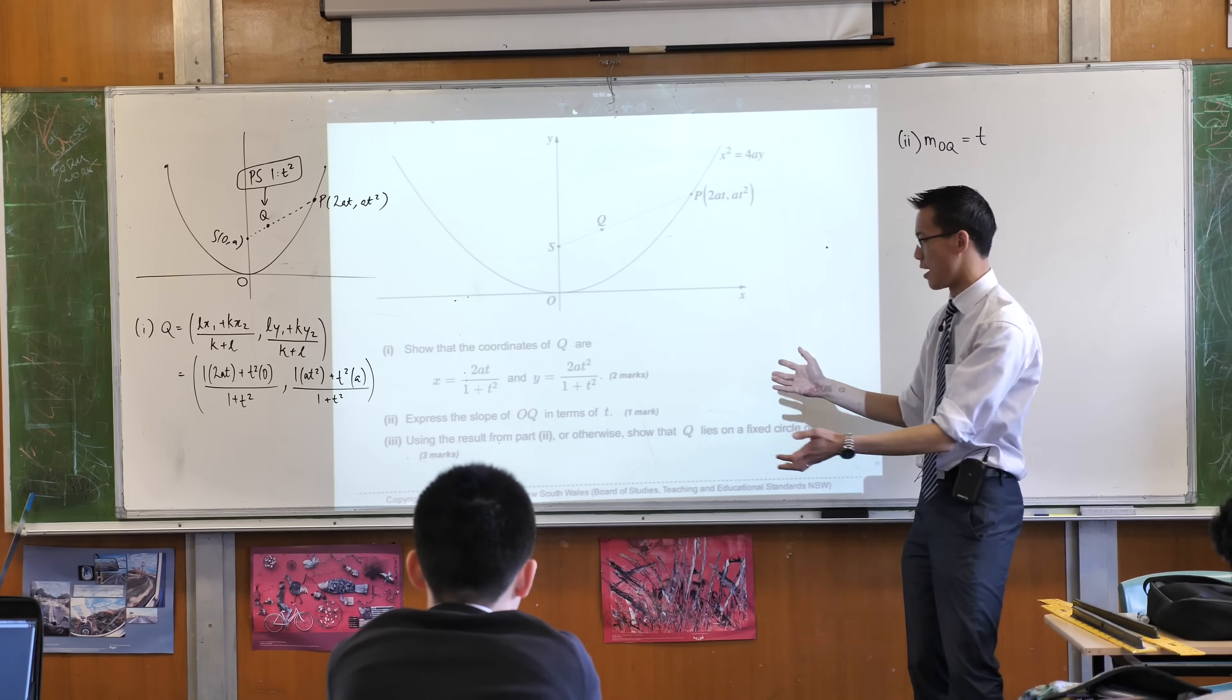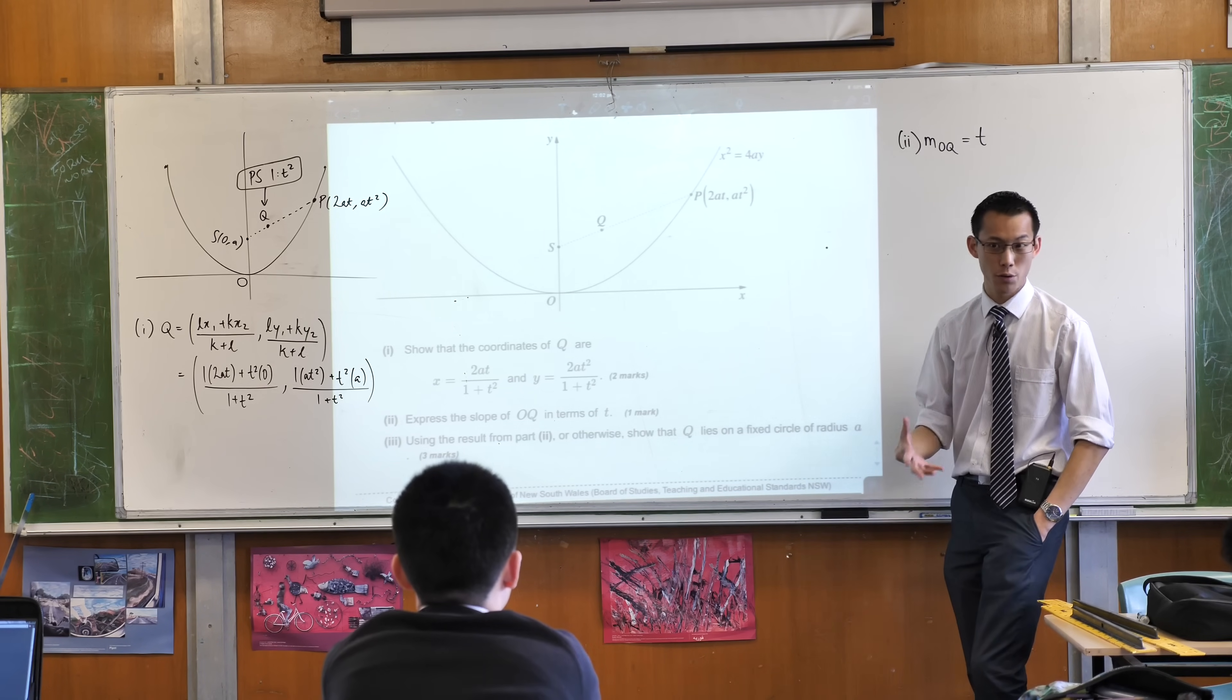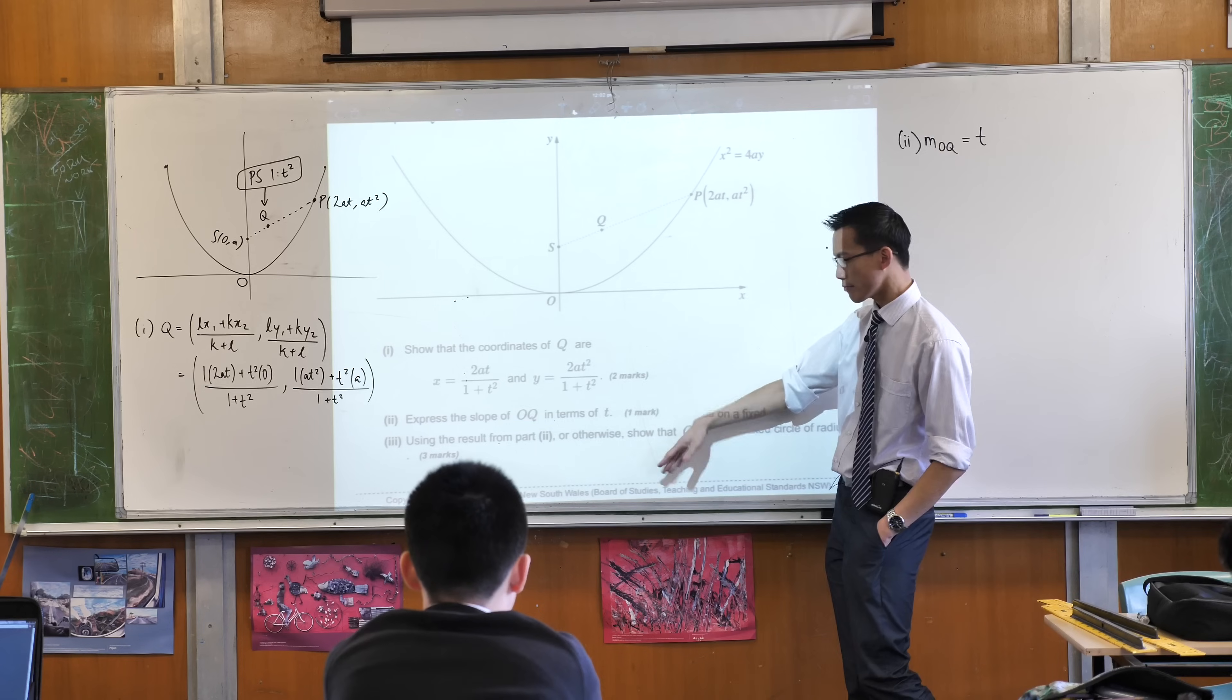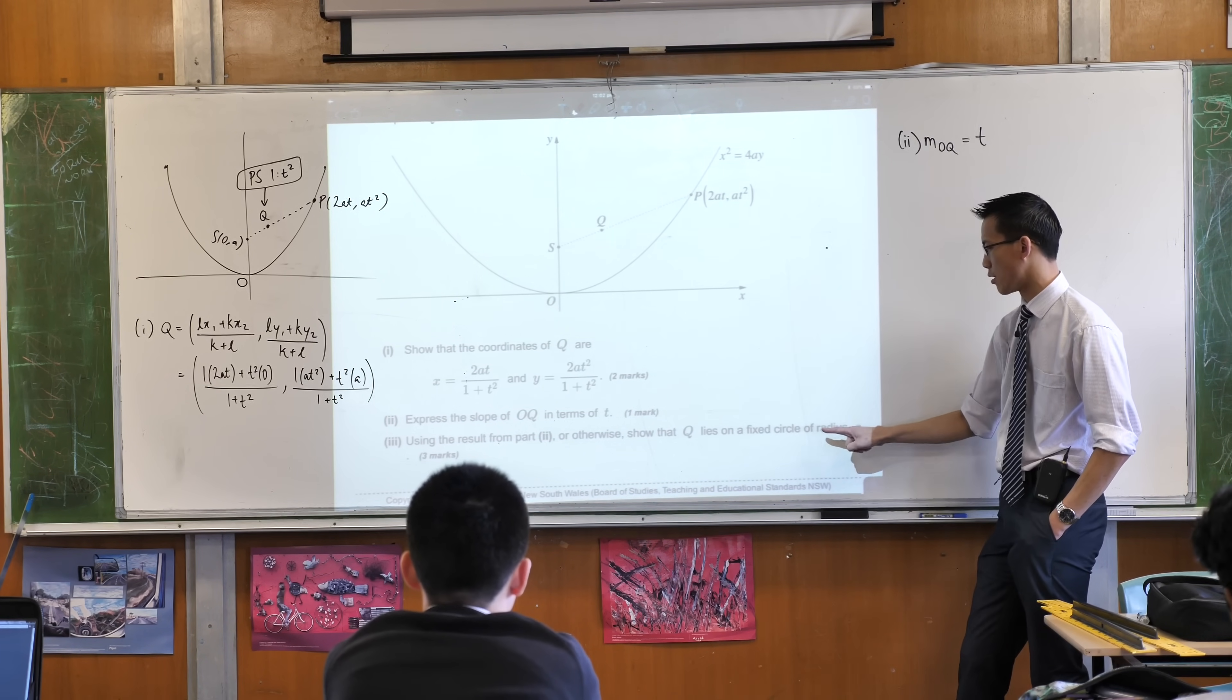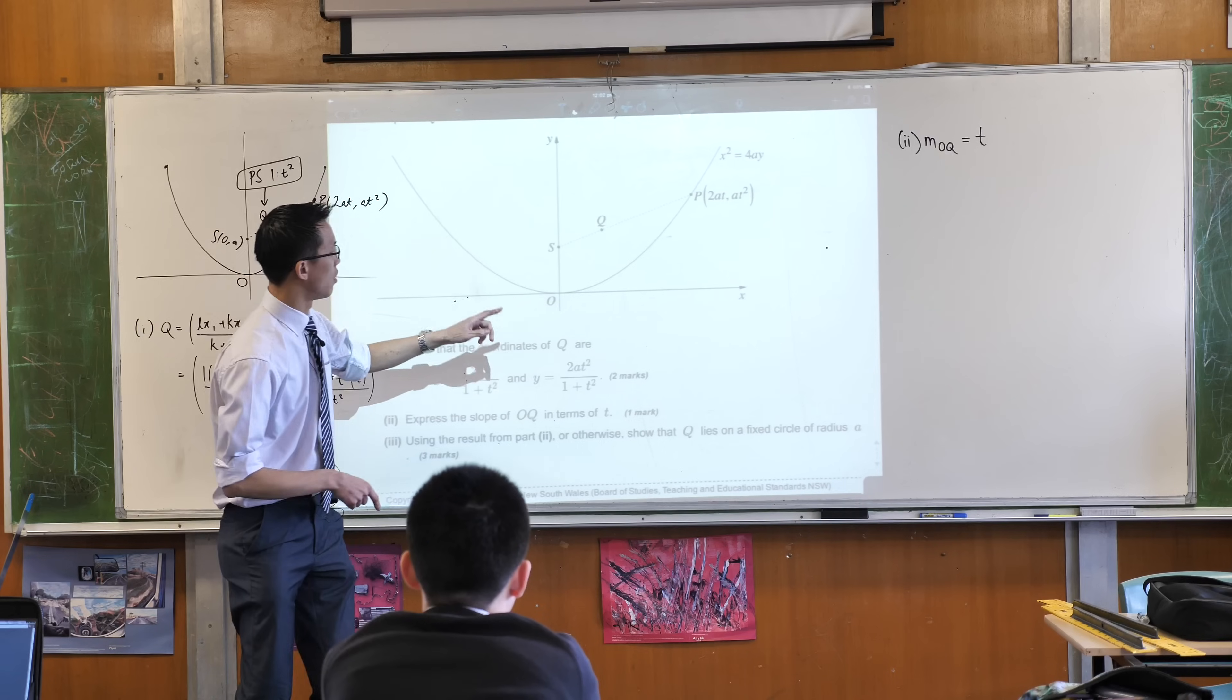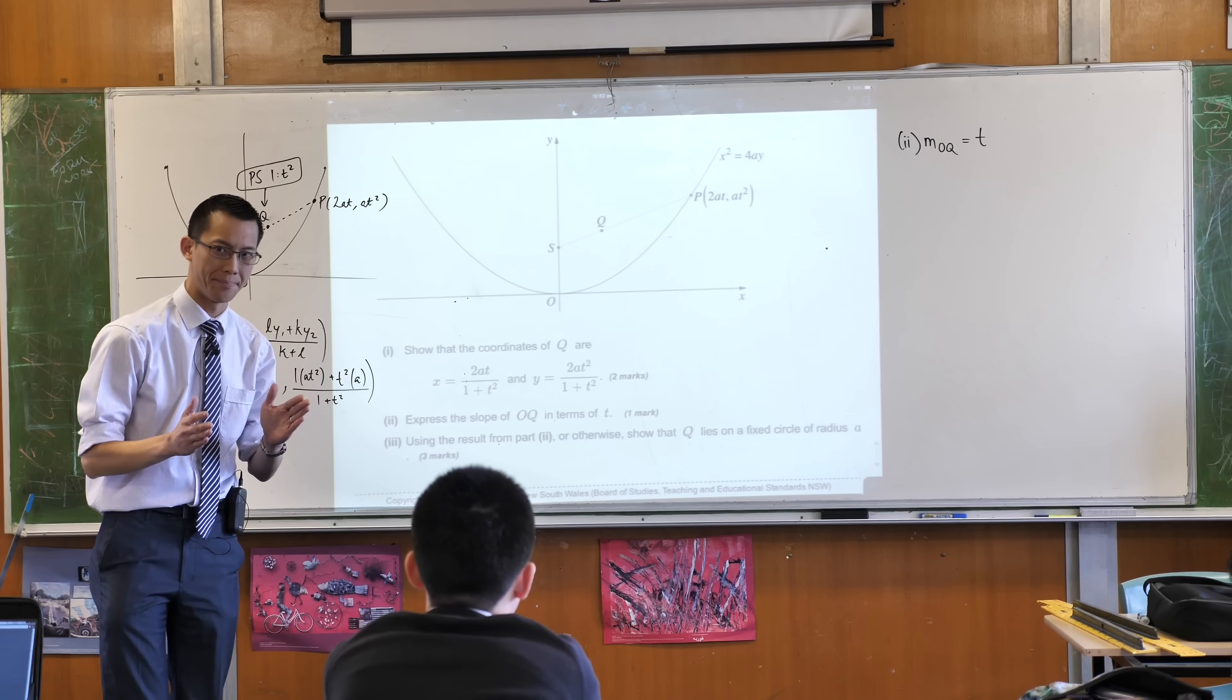Now we come to part 3 and the rubber really hits the road. What does the question even mean? This is part of why so few people in the state got this question. Using this result, or whatever else you want, show that q lies on a fixed circle of radius a. Show that q lies on a circle somewhere here with a fixed radius of a.